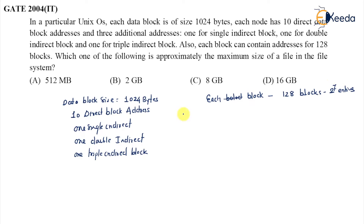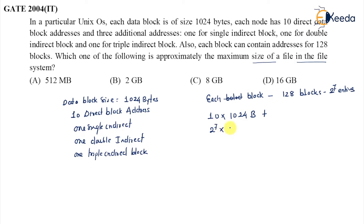If there are 10 direct blocks, then those 10 direct blocks will store 10 × 1024 bytes of data. The question asks: which of the following is approximately the maximum size of a file in this file system? For the single indirect, there will be 2 to the power 7 entries, each pointing to 1024 bytes of data.